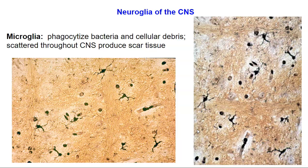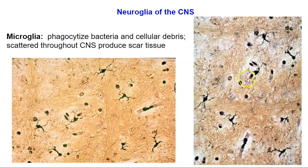First we're going to look at the neuroglia found in the central nervous system. The first type is the microglia. The microglia are these small darker cells here. What they do is they phagocytize — or eat — bacteria, and they also phagocytize and eat cellular debris. So if there were damage to a neuron in the central nervous system, the microglia could eat up those damaged cells.